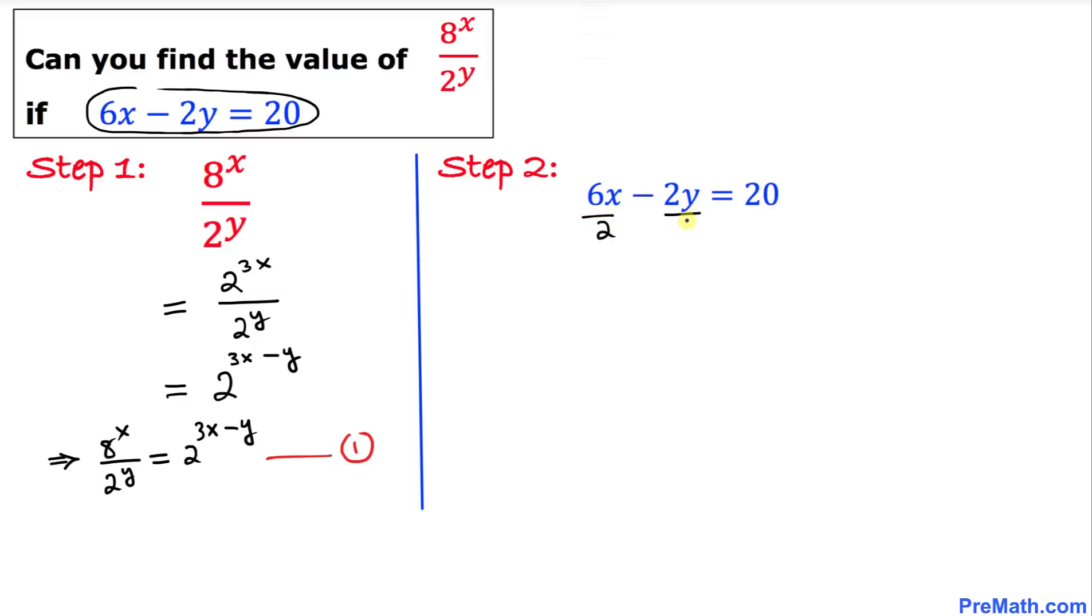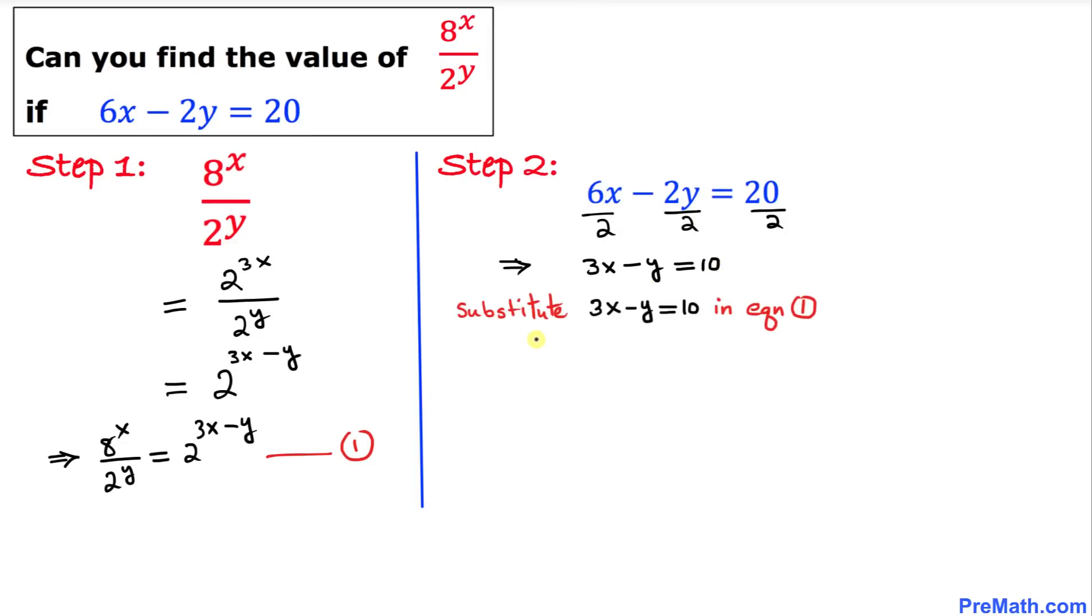This becomes 3x minus y equals 10. Now let's substitute this 3x minus y equals 10 into equation 1.